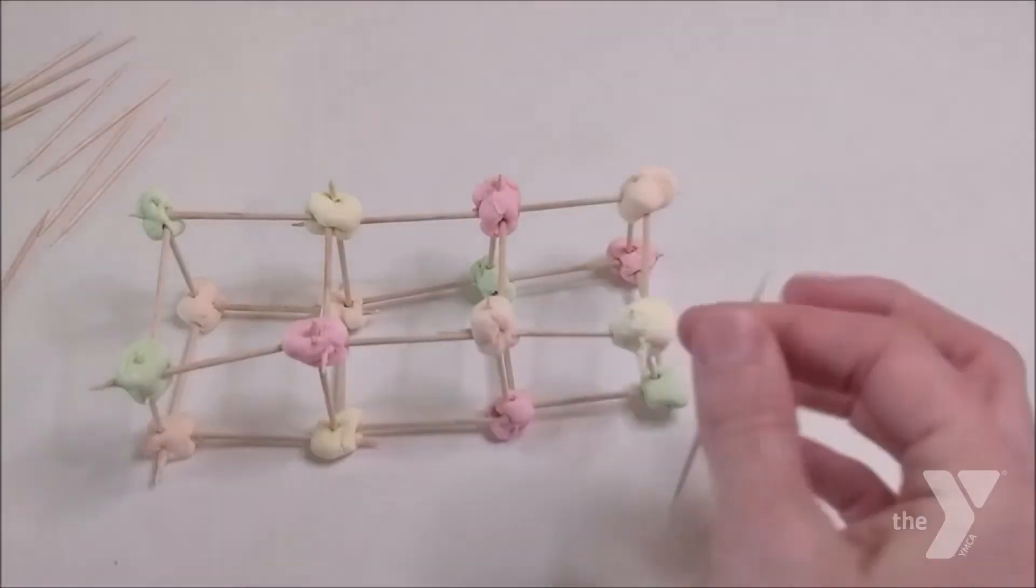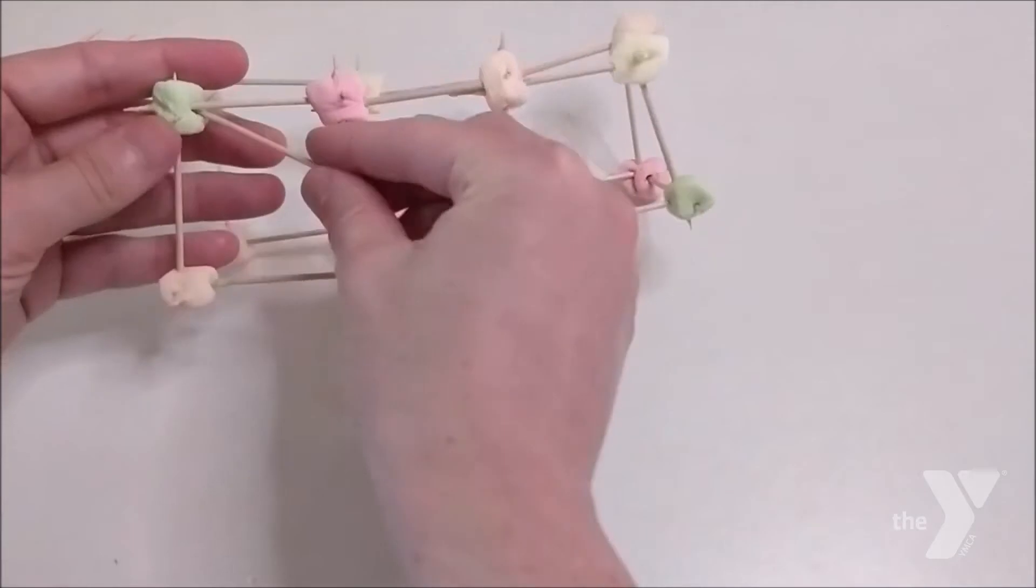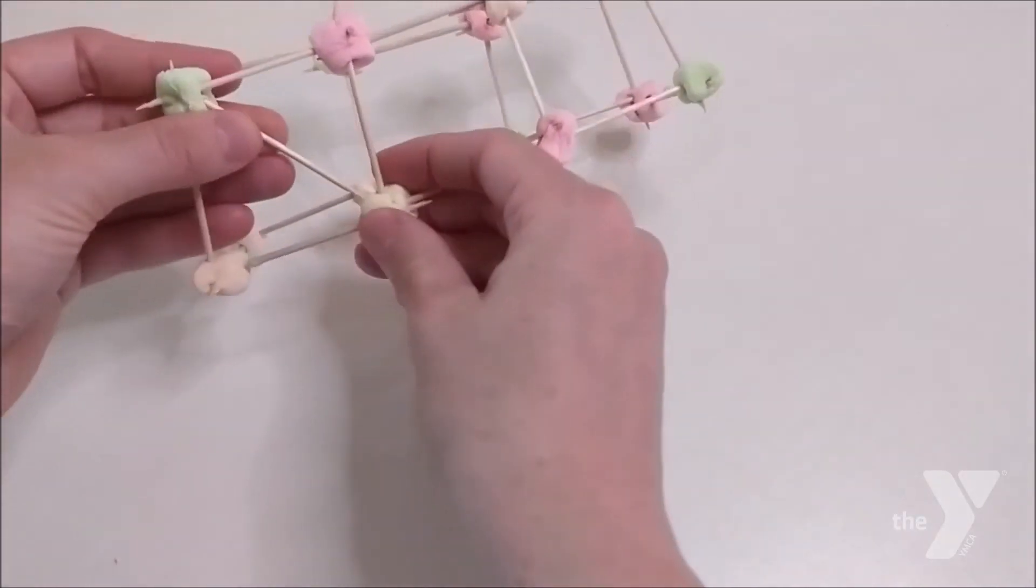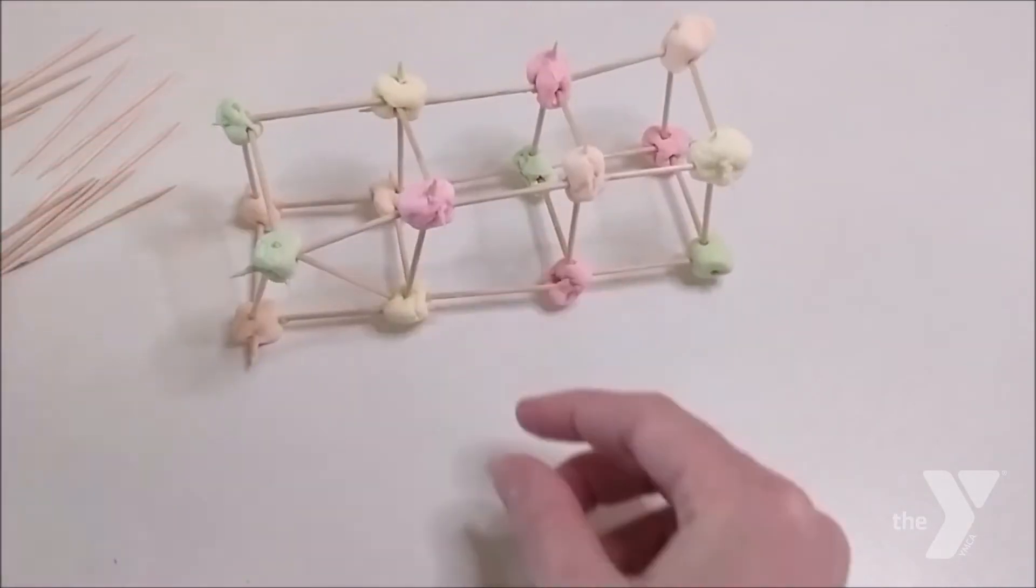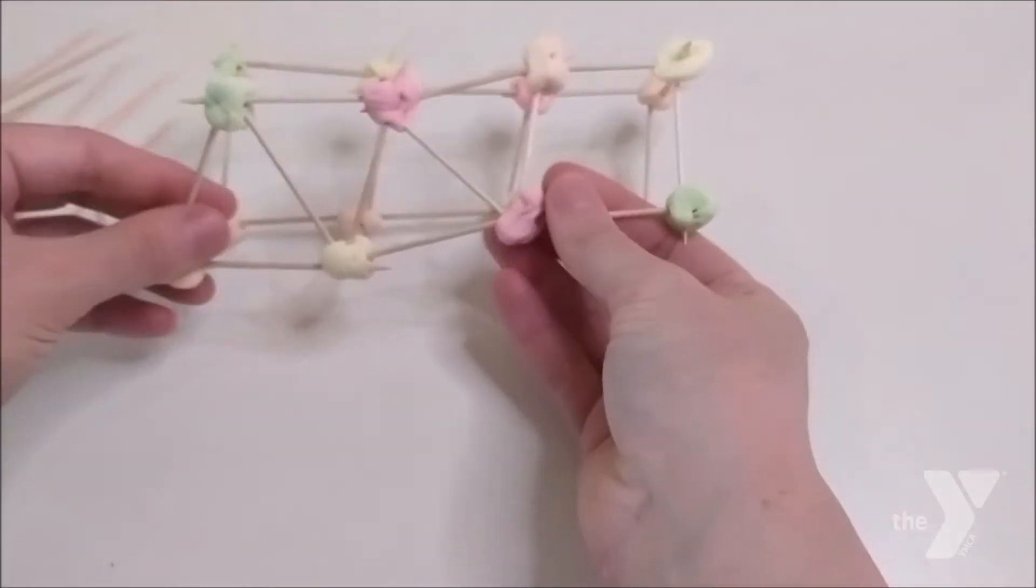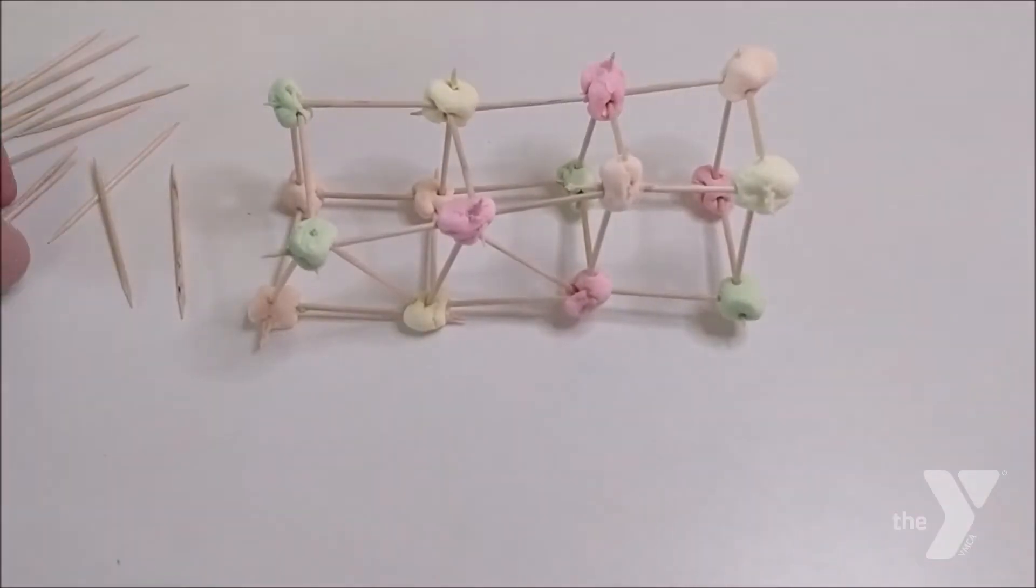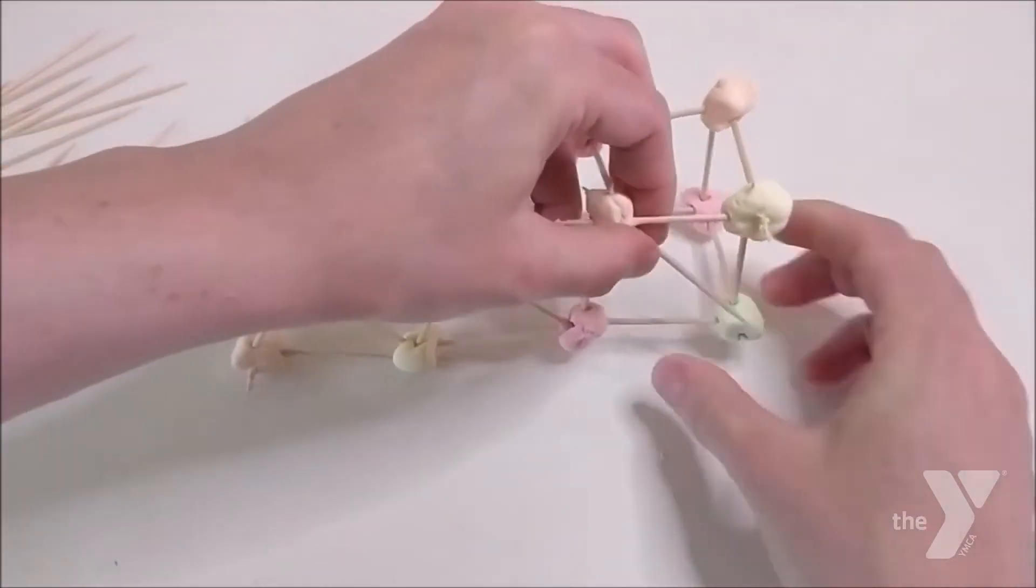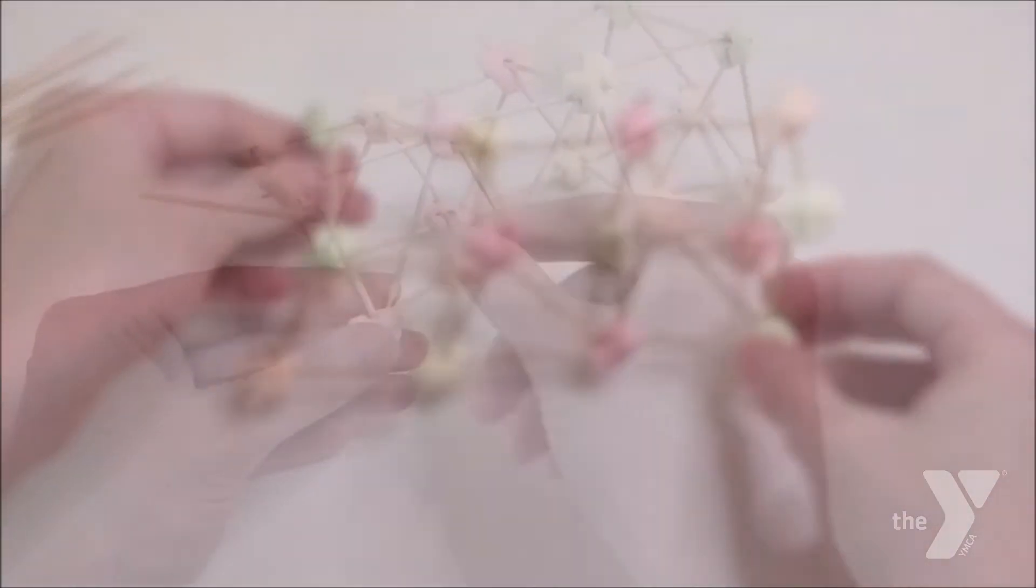Well, we could turn all of our squares into triangles, and we don't even have to take our bridge apart to do that. We could just start with the sides of the bridge, and at every square, just add one more toothpick that crisscrosses the middle to make it into two triangles. So do this along both sides of your bridge.